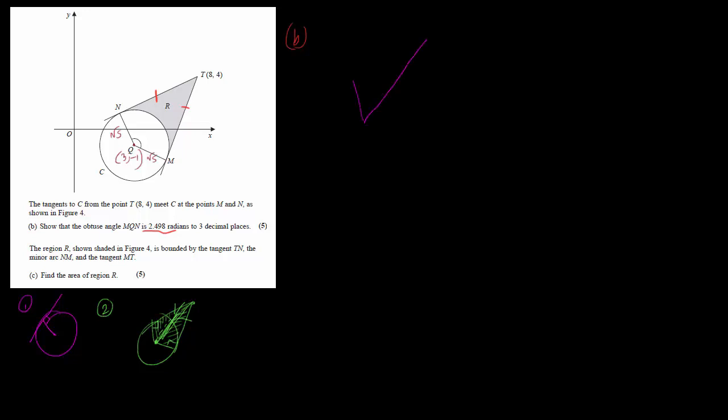In question b, we have tangent TN and tangent TM — two tangents from point T, so those lengths are equal. We need to find angle MQN and show it equals 2.498 radians. We draw half the triangle: with vertices N, T, and Q. This is a right angle at T since the tangent and radius meet at 90 degrees. The radius QN is √5, and since T is (8, 4) and Q is (3, −1), we can find the length TQ.